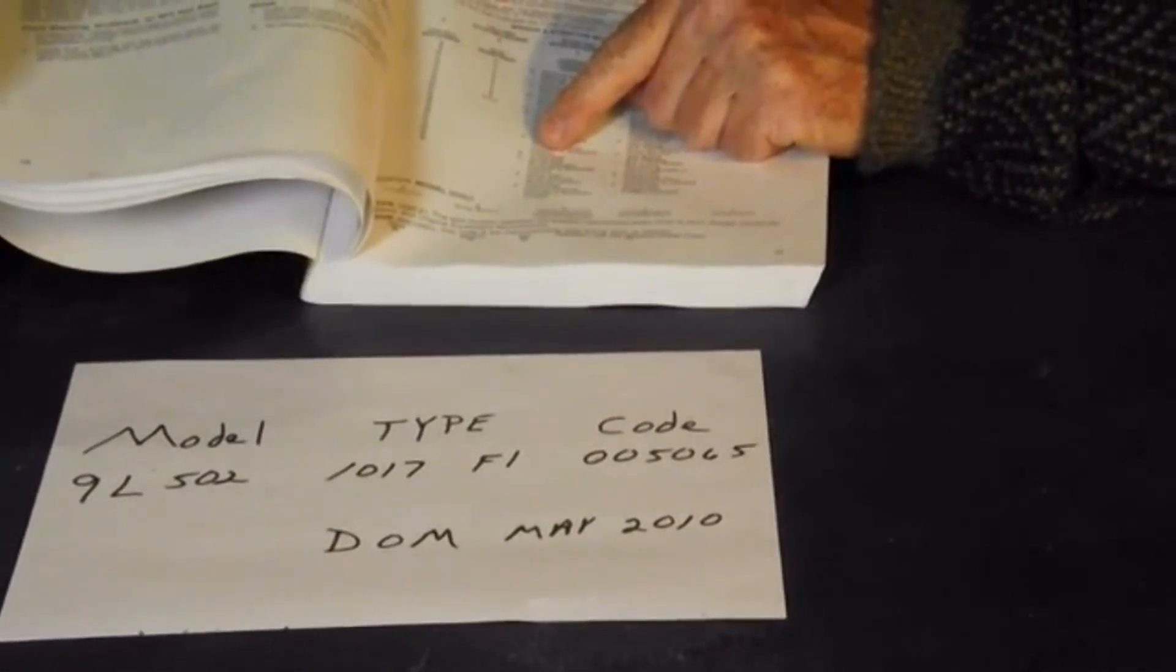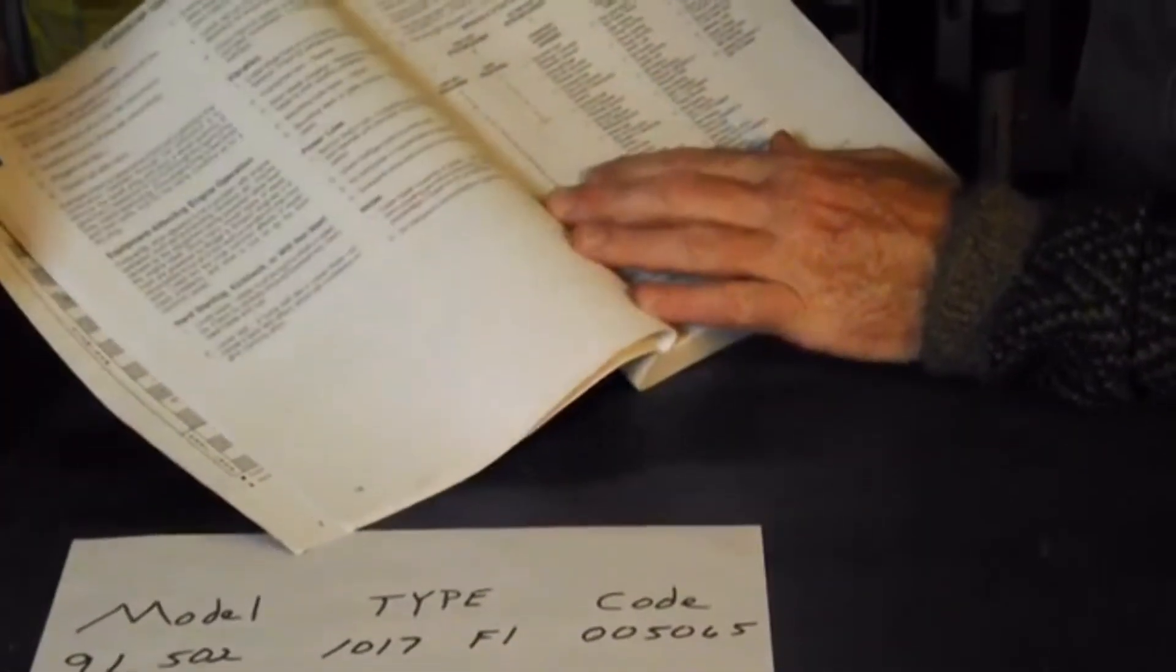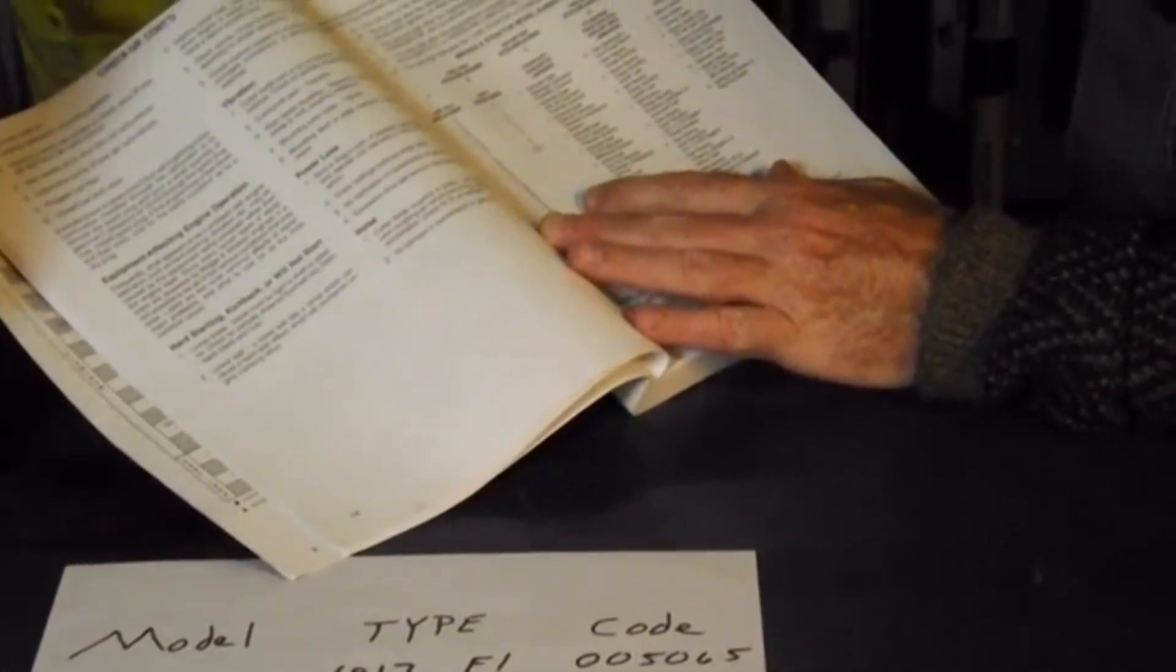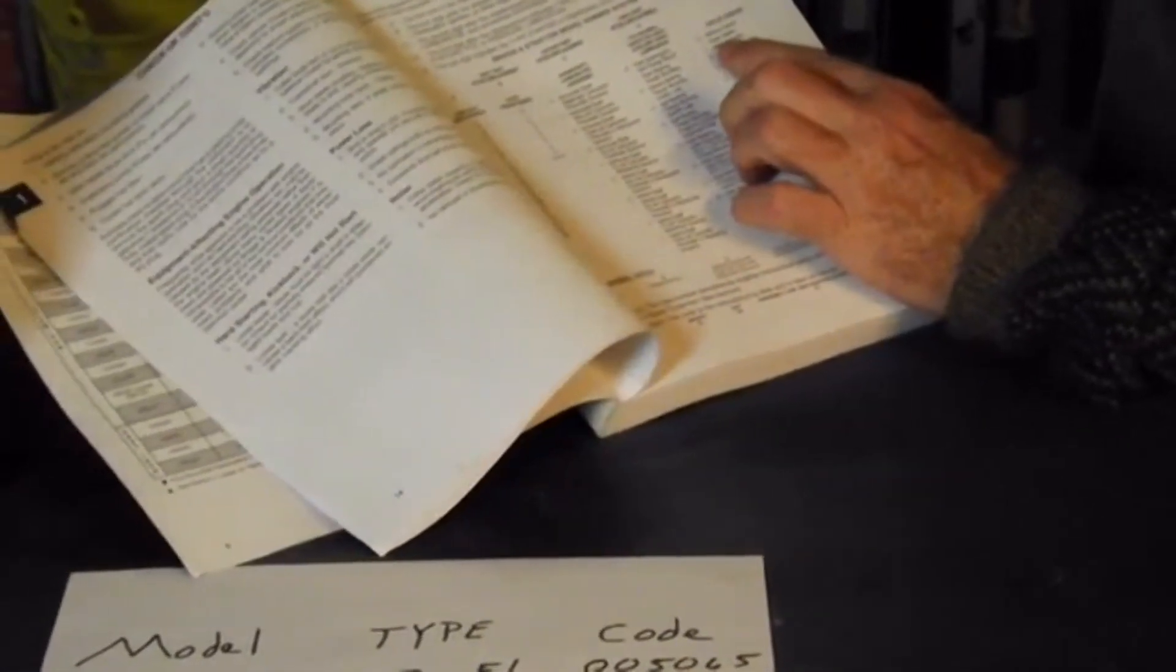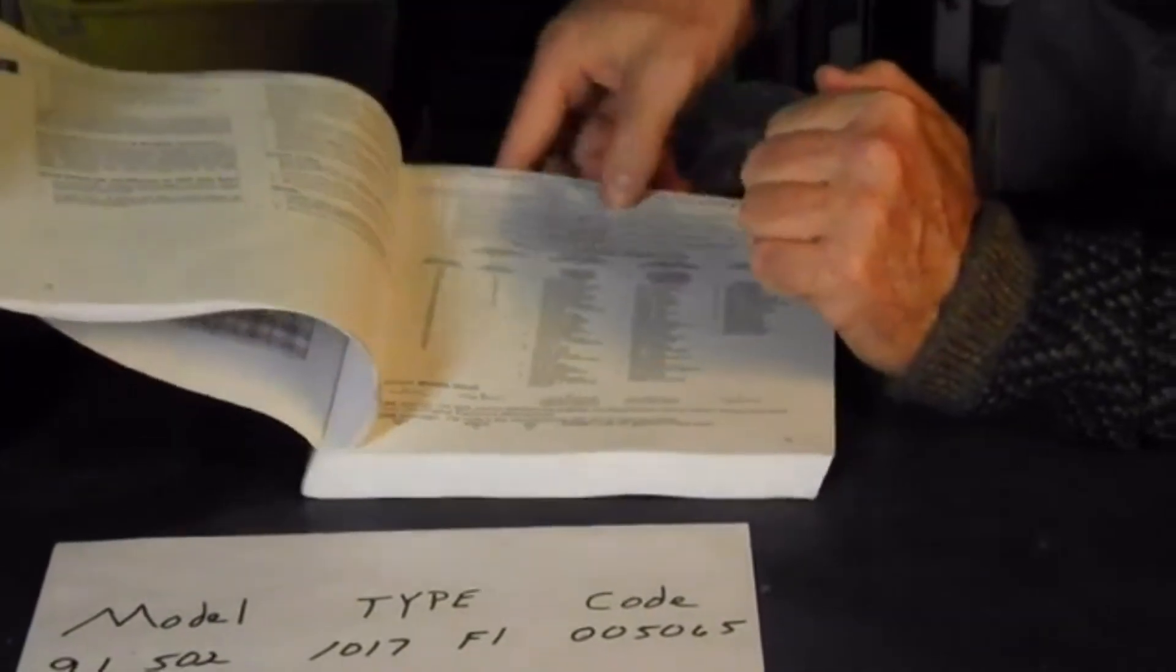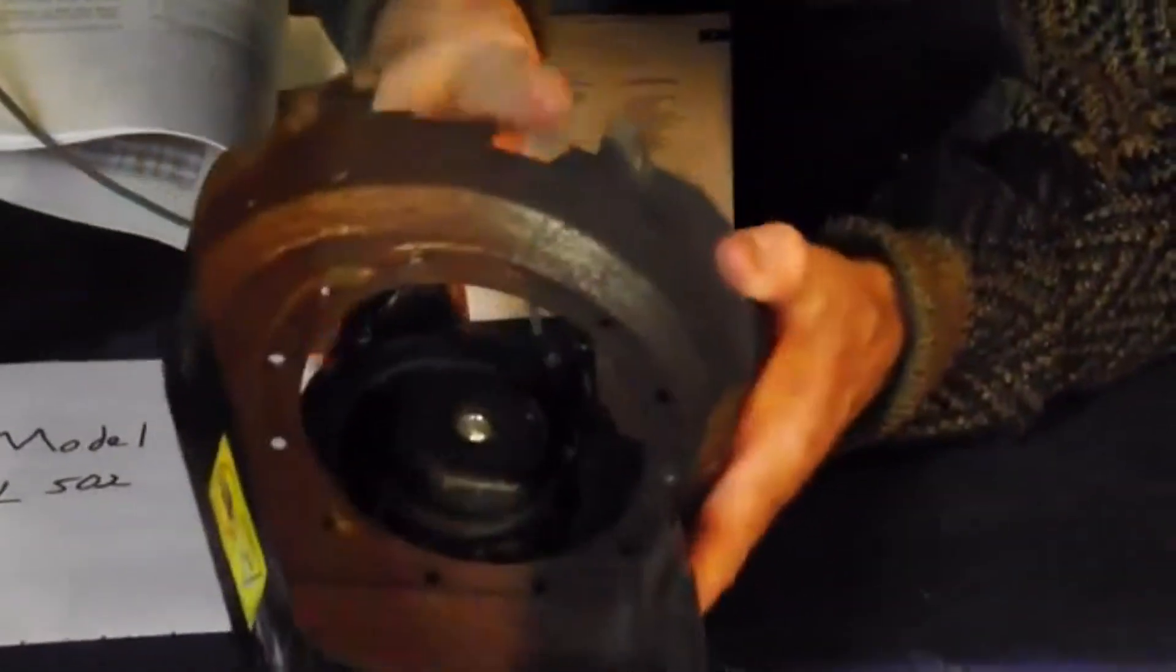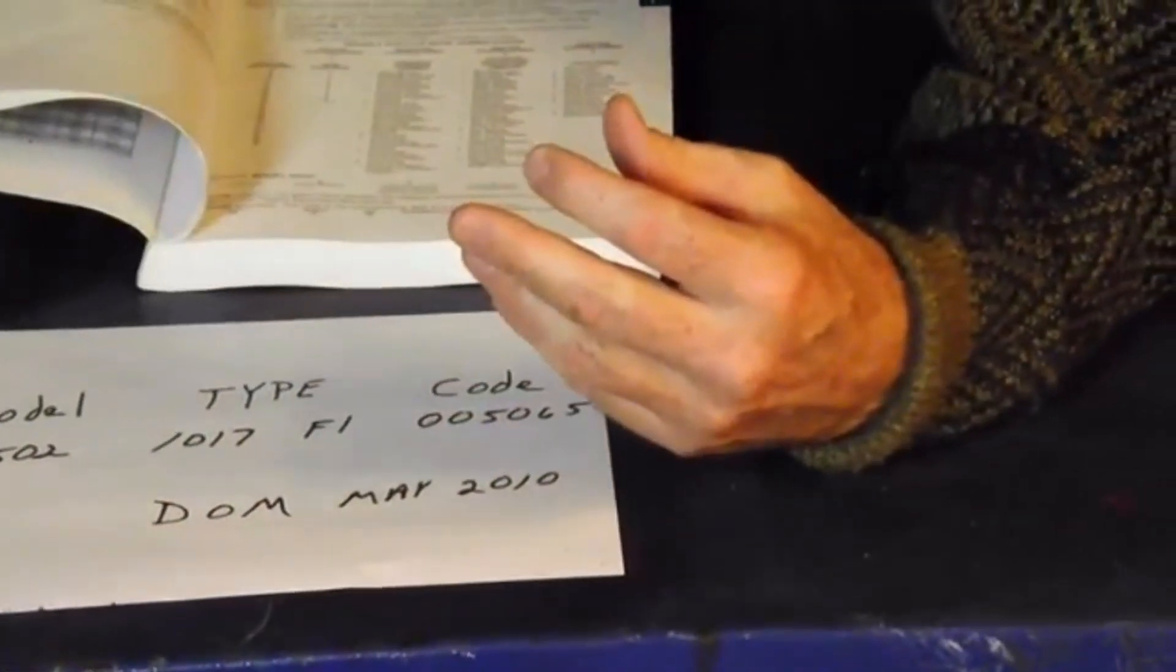And then it says the type of bearings that we have are plain bearings. And then the last part of this number is number 2 and that has to deal with the type of starter. Our type of starter is the rewind starter. And if you look right here, that's the rewind. As you flip it over, the pawls extend out. We'll be definitely getting into a lot more about that in a little bit.